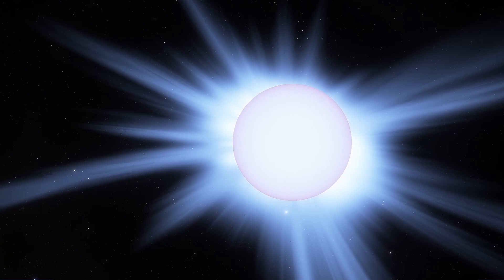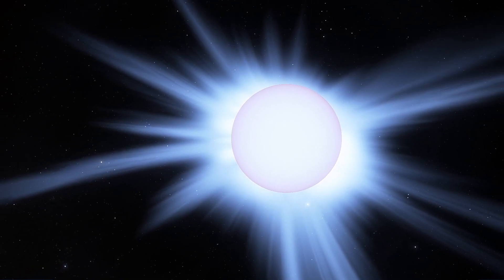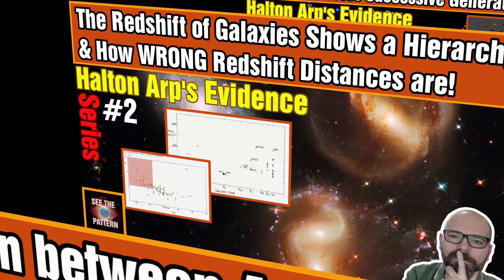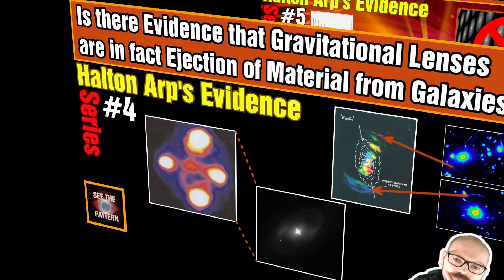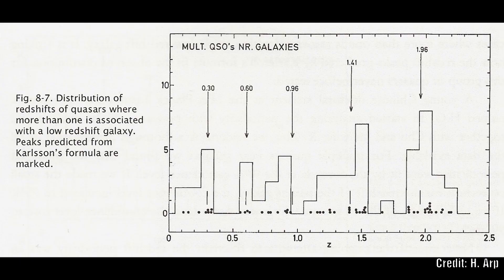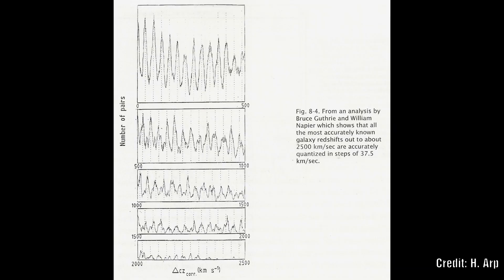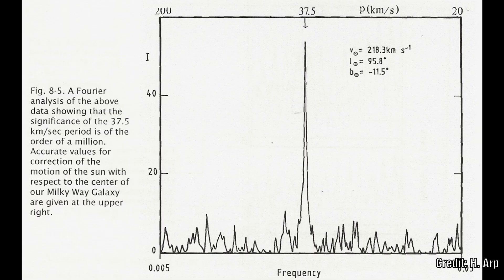So let's take a small step back here. As we have been discussing in the ARP's evidence series, redshift should not be used to judge distance. Instead, what he clearly shows is that there is a quantization of the redshift for not only quasars but galaxies as well. This means there are discrete values that it tends to appear at and not in between.